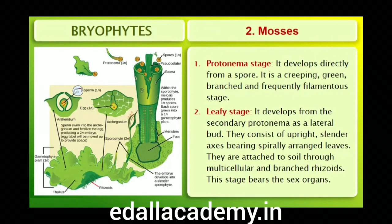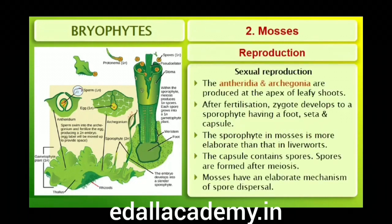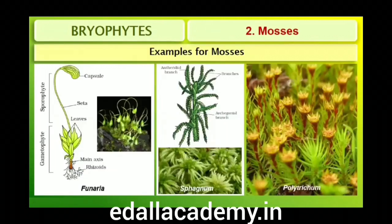The leafy stage consists of upright, slender axes bearing spirally arranged leaves, attached to the soil through multicellular and branched rhizoids. This stage bears the sex organs. Vegetative reproduction in mosses is by fragmentation and budding in the secondary protonema. In sexual reproduction, the sex organs — antheridia and archegonia — are produced at the apex of the leafy shoots. After fertilization, the zygote develops into a sporophyte consisting of a foot, seta and capsule. The sporophyte in mosses is more elaborate than that in liverworts; the capsule contains spores formed after meiosis. Common examples of mosses are Funaria, Polytrichum and Sphagnum.